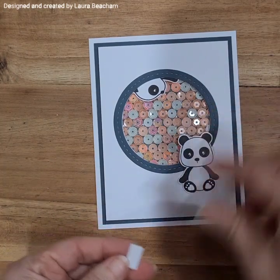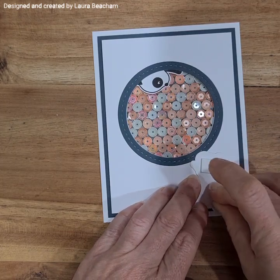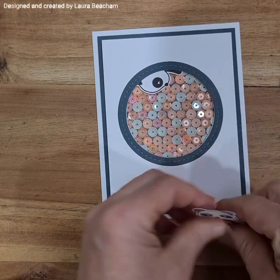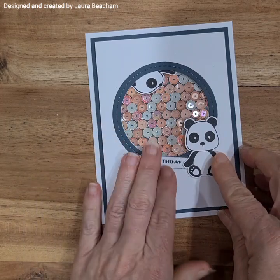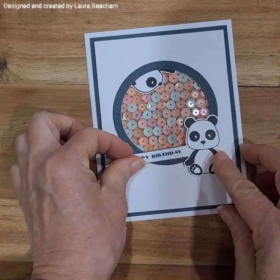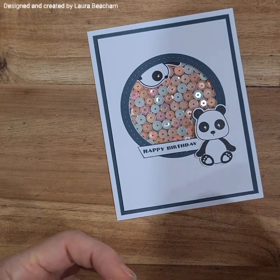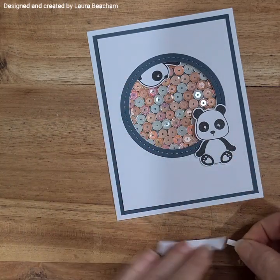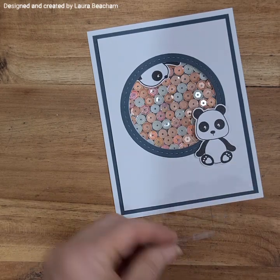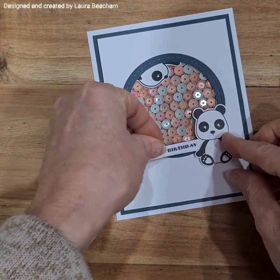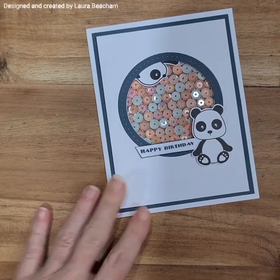I'm just going to sit that over the top now like so. I've got another little panda here to add on to the front. I'll just get him taped up, pop him on the front there. Then I've got my happy birthday sentiment ready to go. I think I'll just pop it in around this shoulder area just there.